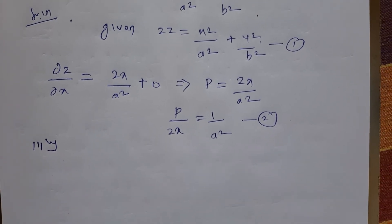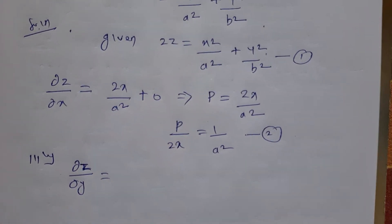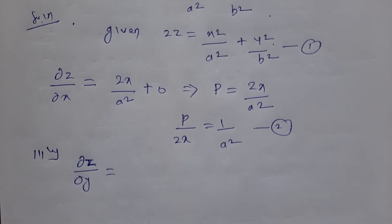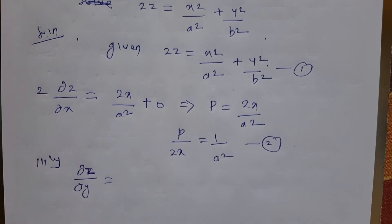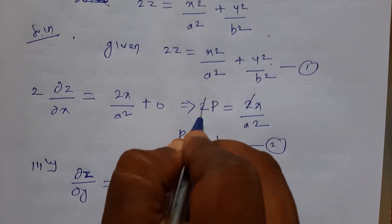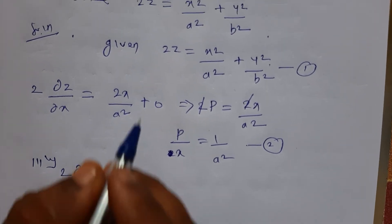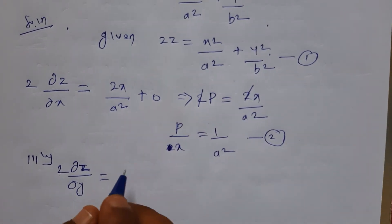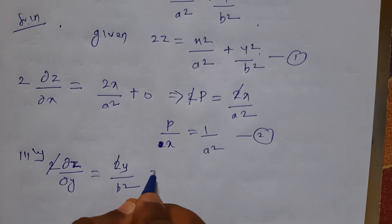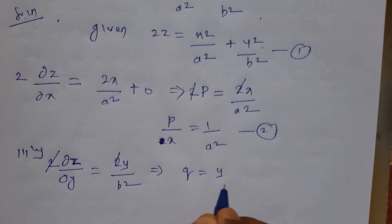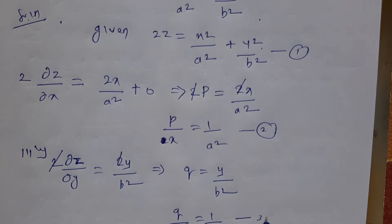Similarly, differentiating equation 1 partially with respect to y: the first term gives 0, and the second term gives 2y/b². With the factor of 2, we get dou z/dou y = q = y/b², so q/y = 1/b². I denote this as equation number 3.